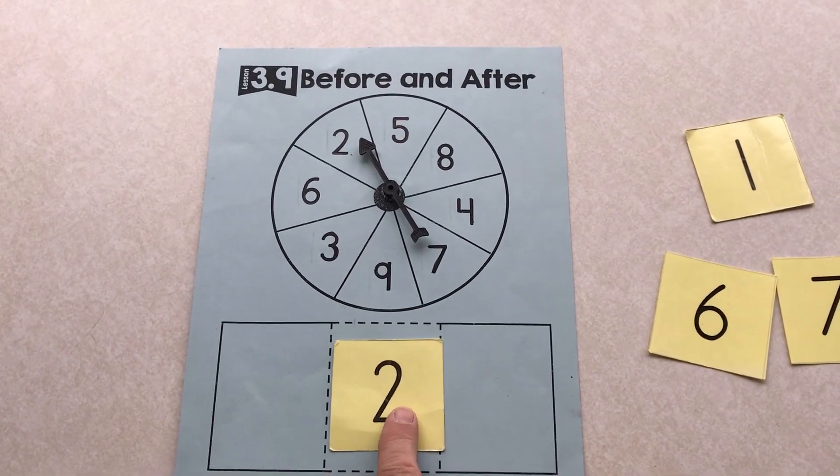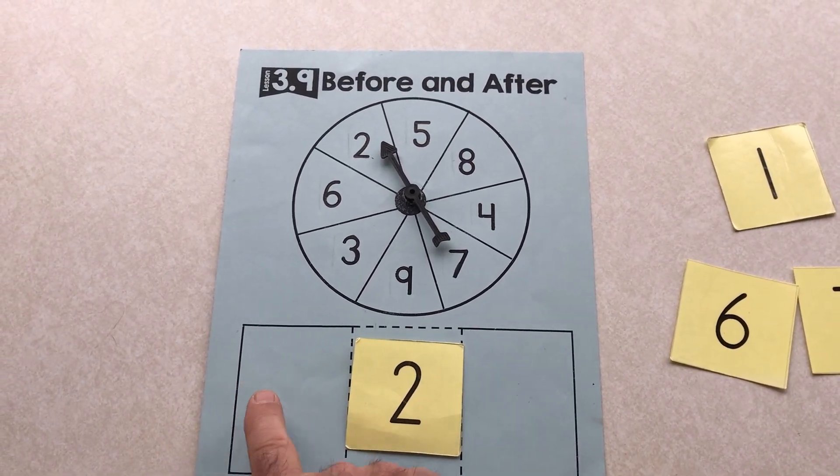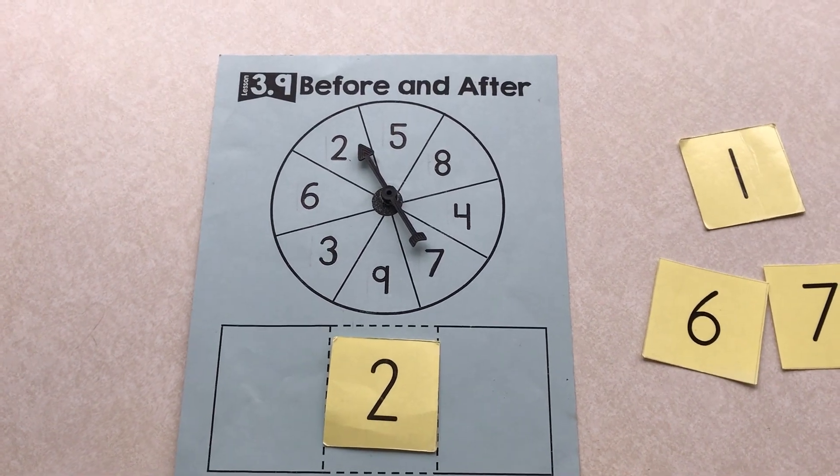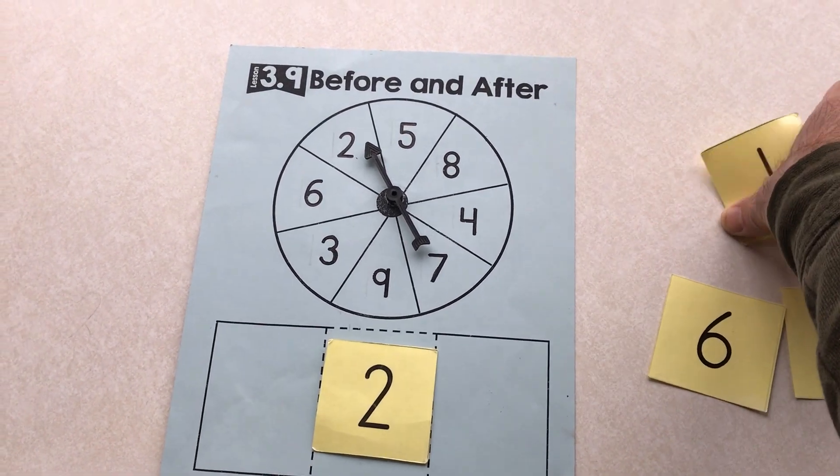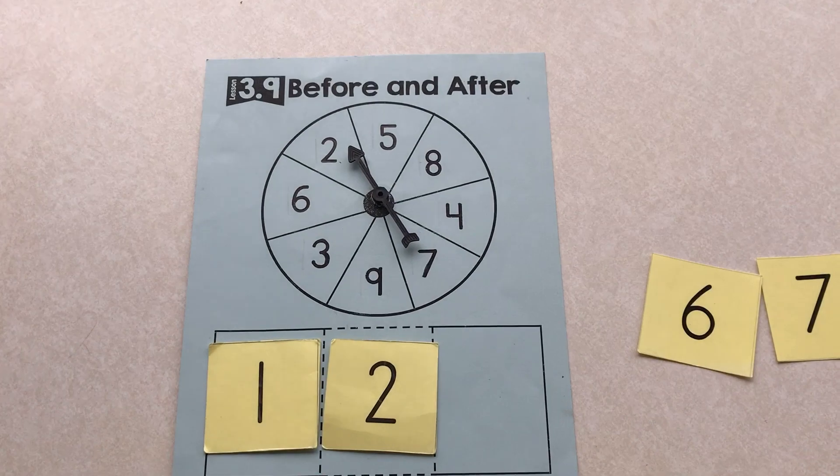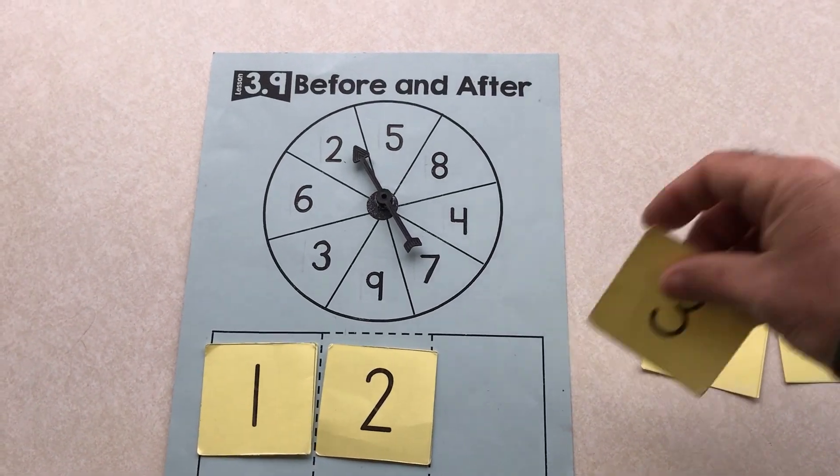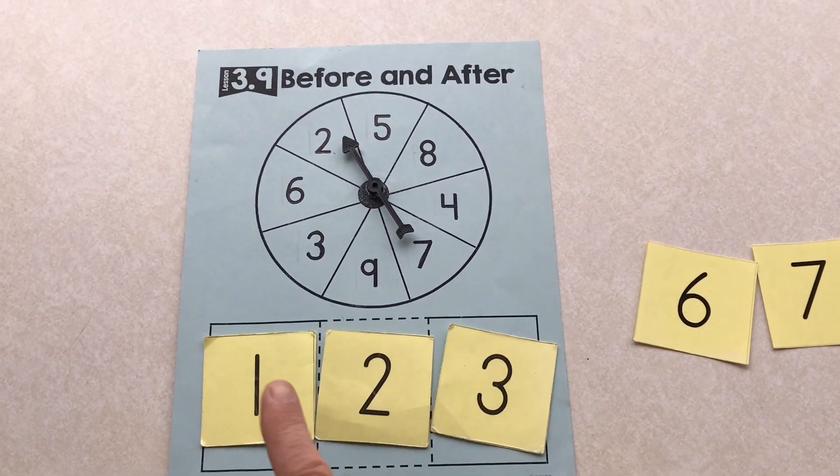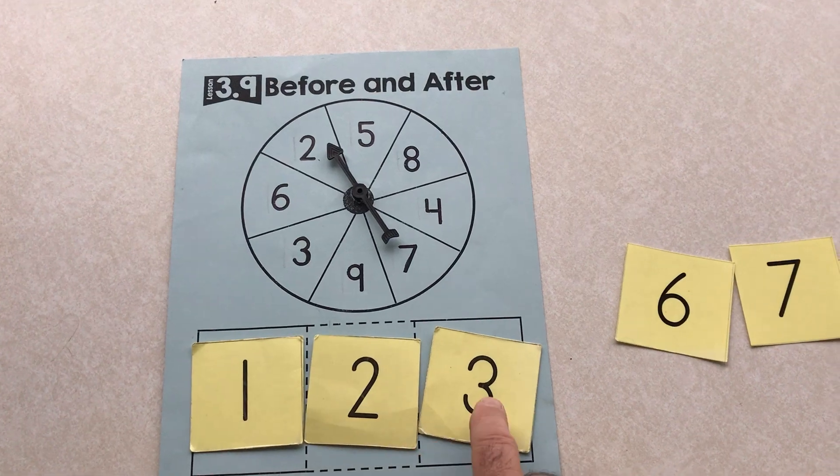Two is the number. I want you to put the number that comes before and after. One, two, three.